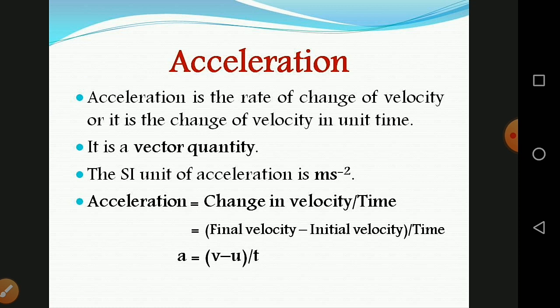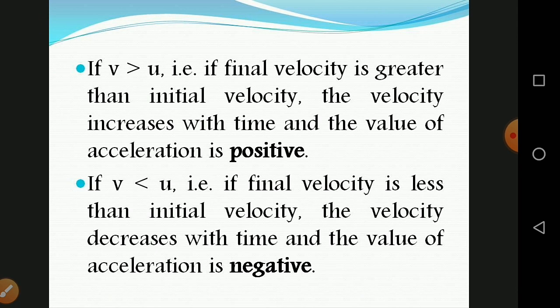Acceleration is the rate of change of velocity, or change in velocity per unit time. It is also a vector quantity. The formula for acceleration is: a = (v − u) / t, where v is the final velocity and u is the initial velocity. Consider a body moving in a straight line without reversing its direction. If v is greater than u — that is, final velocity is greater than initial velocity — the velocity increases with time and the value of acceleration is positive. If v is less than u — final velocity is less than initial velocity — the velocity decreases with time and the value of acceleration is negative.